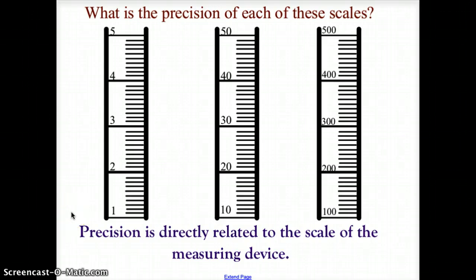Now, precision is dependent upon the scale of the item we're using in our measure. So for instance, here we have three different scales, and when we look at the precision, which one is going to be more precise? Which one is going to give us a better solution? Well, the one on the far left is in units of 0.1, where the one in the middle is in units of 1, and over here on the right we have measures of 10.